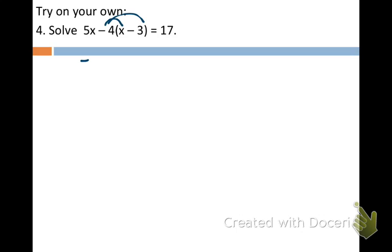So 5x comes down, stays the same, and we get negative 4x, negative 4 times x, and we're going to get a positive 12 because that's negative 4 times negative 3. And that equals 17. Okay, so now we need to combine like terms on the left. We have 5x minus 4x, so that's going to be a 1x plus 12 equals 17.